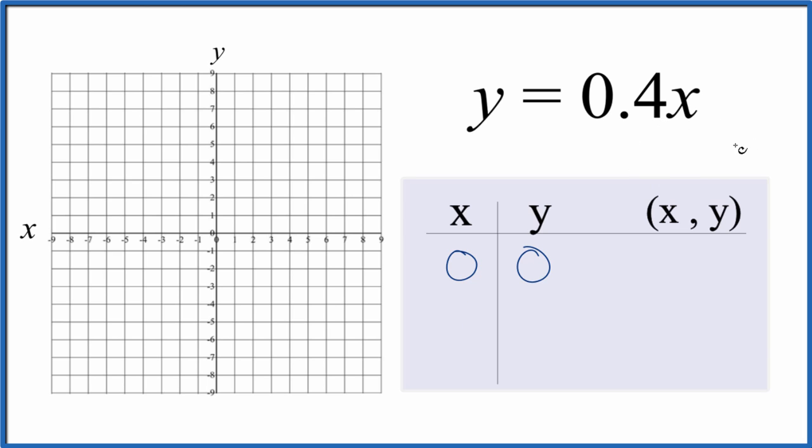So I know 5 times 0.4, that would give me 2. So I'm going to put 5 in for x. So 5 times 0.4, that's 2 and now I have whole numbers and that's a little easier to graph.